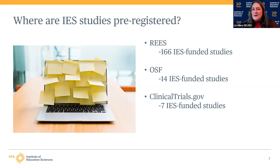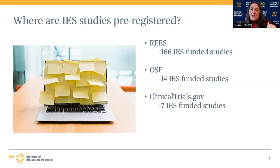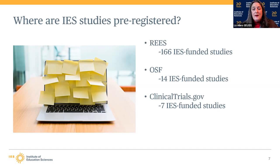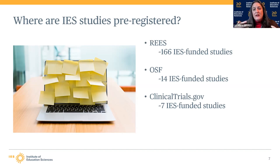I did some research trying to figure out where our studies are being pre-registered. Most to date are in REESE — that's through the Society for Research and Educational Effectiveness — with 166 IES-funded studies, including both research centers and the National Center for Education Evaluation. I found only 14 IES-funded studies in OSF, which is probably an underestimate. And in clinicaltrials.gov, I located seven, particularly in the social-emotional and mental health space where there's overlap with NIH-type work.